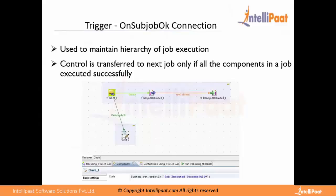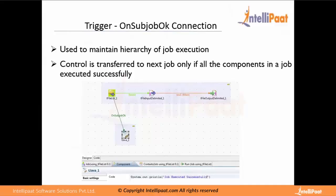What the On Sub Job OK trigger does is transfer control to the next job only if all the components in a job executed successfully. In the screenshot, we have three components doing the iterative reading of all those files. What I want is that after all of the files have been read successfully, it should print a message that job execution has been done successfully. Let's see how we can do that in Talend 6.1.